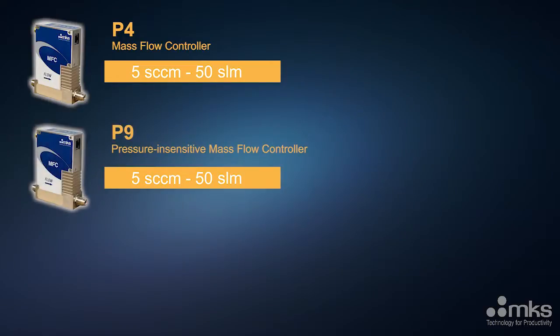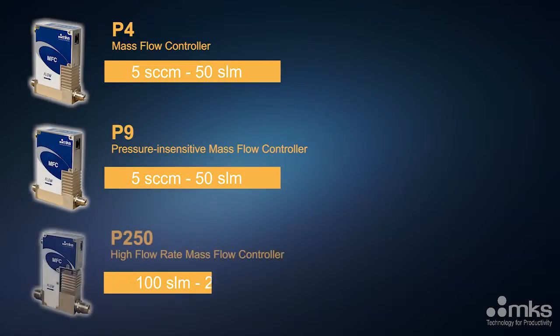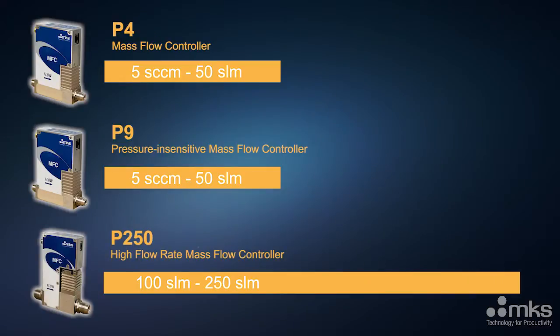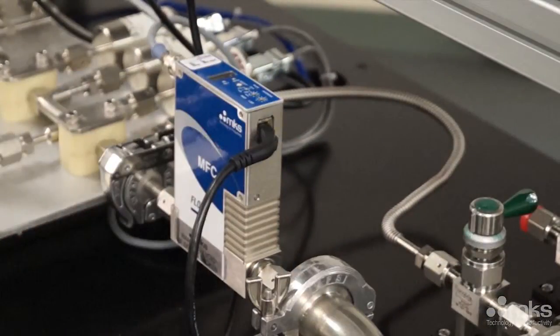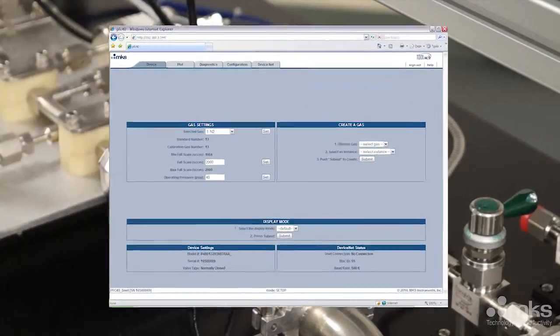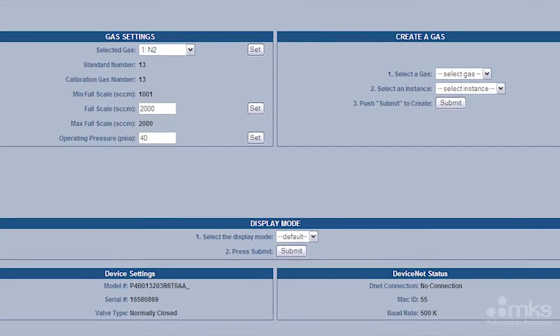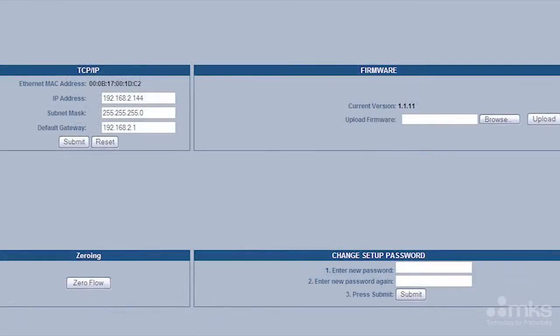P-4 and P-9 multi-range MFCs are available in flow rate ranges up to 50 SLM full scale, and the P-250 up to 250 SLM. P-Series MFCs are designed with an embedded utility, accessible through a standard Ethernet interface and standard web browser, allowing users to easily configure the measurement range or gas type.